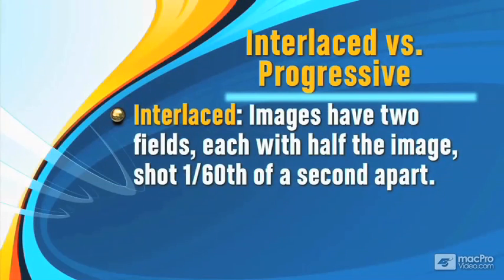An interlaced image has two fields, each on alternating lines, each containing half the image but shot one-sixtieth of a second apart.